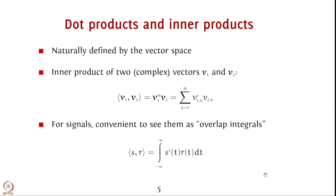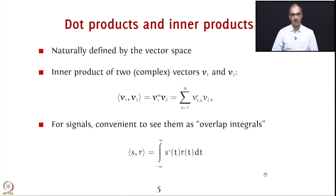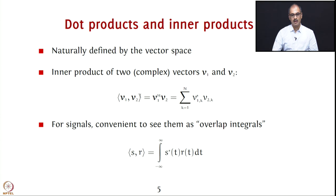Dot products and inner products have the same meaning as in the mathematical vector context, but here we extend the concept to signals as well. The inner product of two complex or real vectors v1 and v2 is denoted by angle bracket notation ⟨v1, v2⟩ and defined as v1 hermitian times v2 — that is, take each element of v1, conjugate it, multiply by the corresponding element of v2, and sum the results.